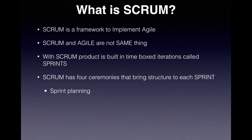The four key ceremonies that bring structure to each sprint are: first, sprint planning. Before a sprint starts, there is a sprint planning meeting that happens with the product manager, other stakeholders, and the development team to figure out what work is going to happen within that sprint and what the priority is for the business stakeholders. From the product backlog, user stories are pulled into the sprint backlog, and the team creates subtasks for those user stories and starts working on them to deliver something working by the end of the sprint.